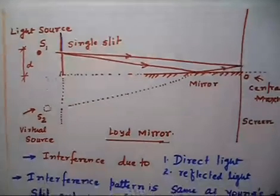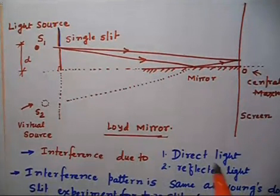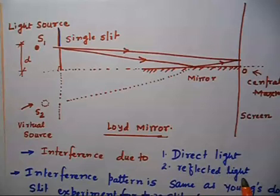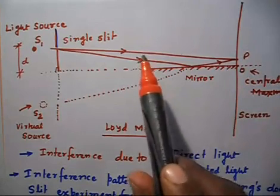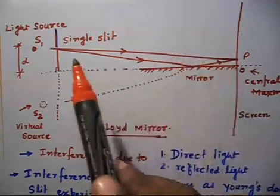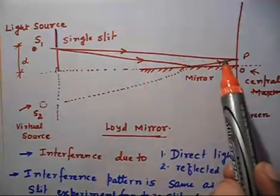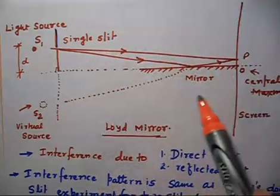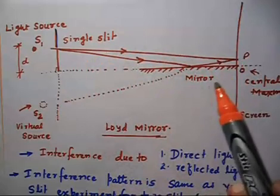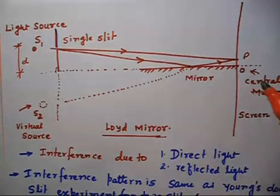In this case, the interference pattern will be observed due to two lights: one that is coming directly — the direct light — and another that is the reflected light. So if I consider any point P on the screen, a direct light is coming from the upper path, and a reflected light comes from the mirror and then reaches P. These two lights can interfere — basically the electric fields interfere — and interference of the electric field results in intensity on the screen.